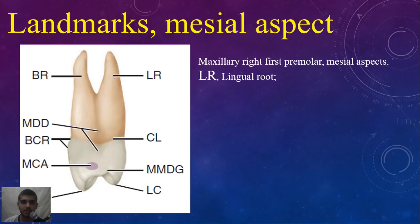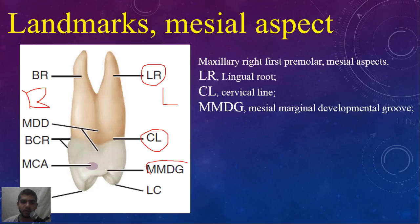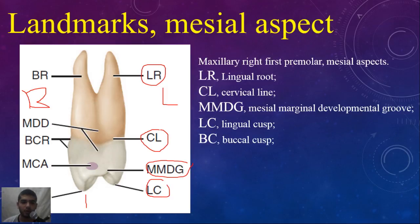We will start from lingual to buccal. From the lingual side we can see the lingual root, the cervical line, the mesial marginal developmental groove, and the lingual cusp. Now we will shift to the buccal side. We can see the buccal cusp, which is longer than the lingual cusp — we will talk about that — and the mesial contact area.